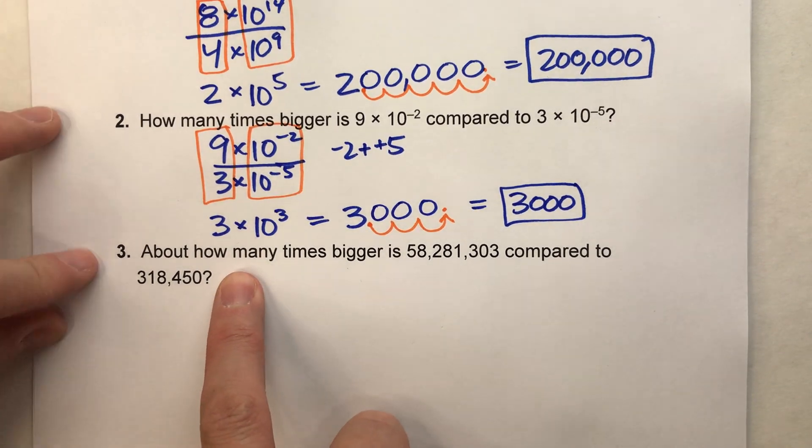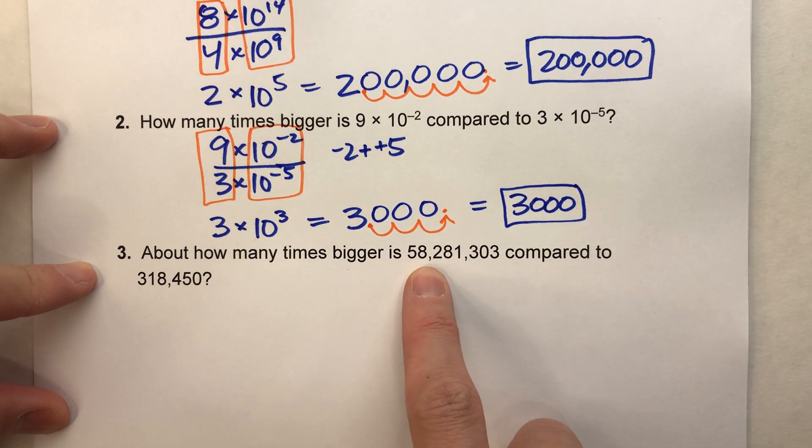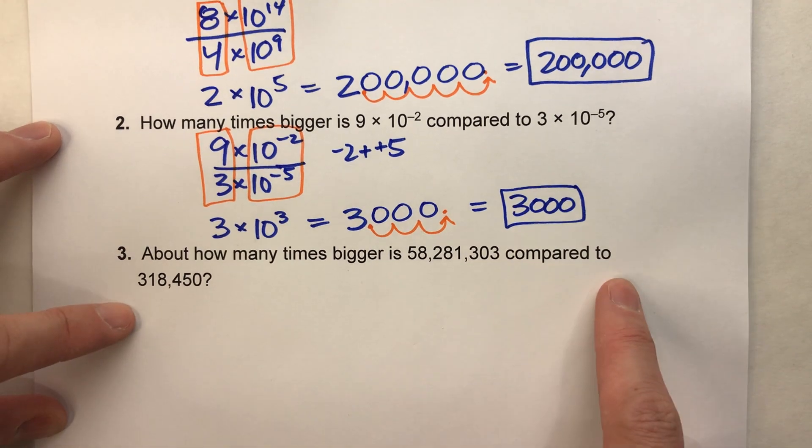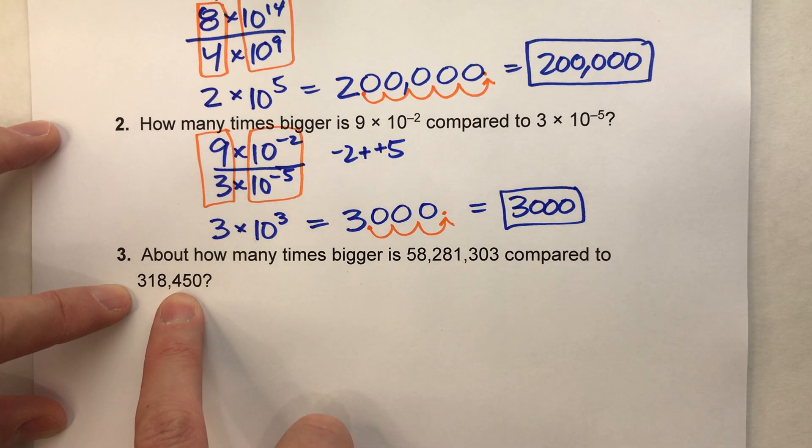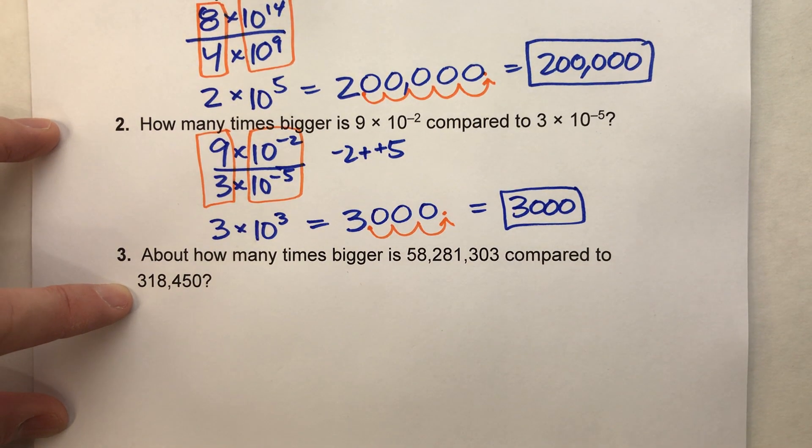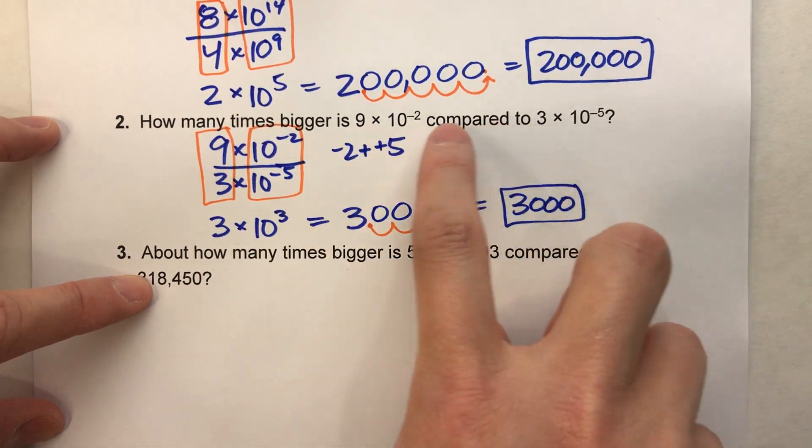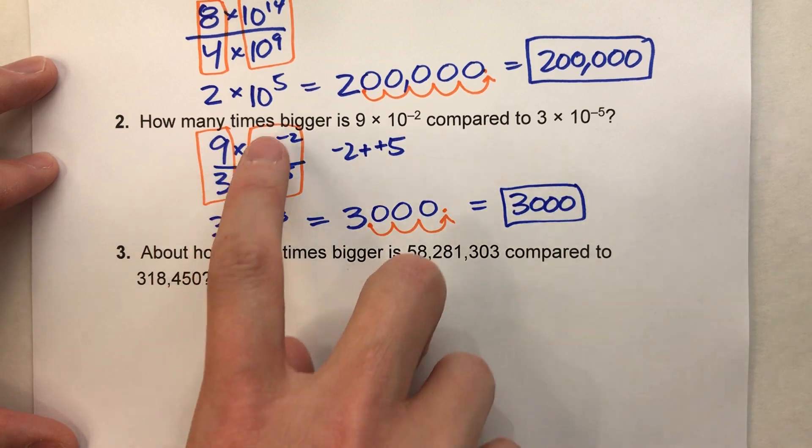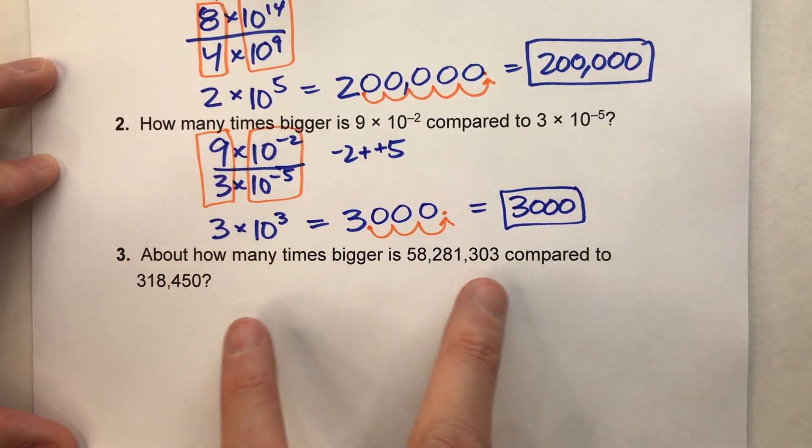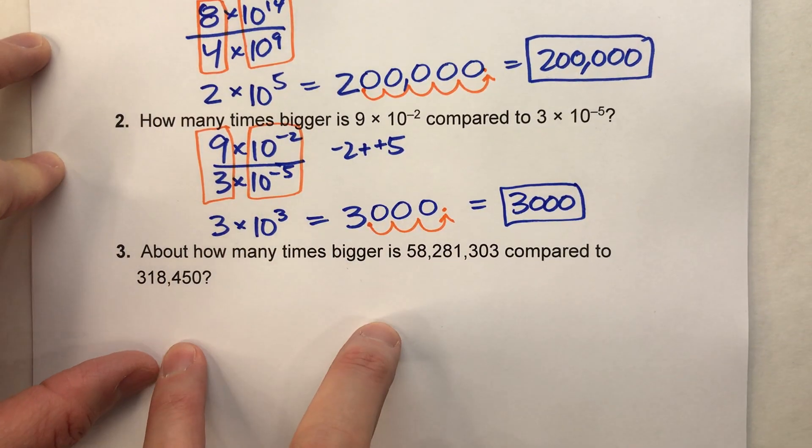Here we go. Now, about how many times bigger is 58,281,303 compared to 318,450? So this one's a little harder. Notice these aren't simple numbers where it's written in this nice, neat format where we can do this easy math where we can get an answer. These are some pretty complicated numbers.